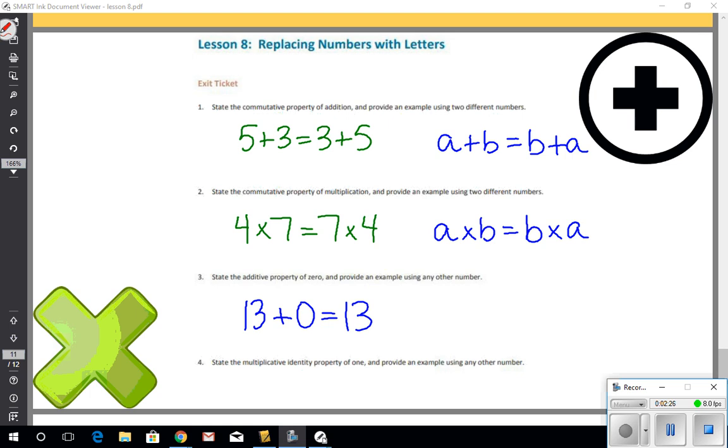So I can use any letter I want. So let's use the letter c. C+0 still gives me c. So any number plus zero, anything that you can think of to insert for the variable c, you will always get that number that you started with. So any number added to zero equals itself. That is the additive property of zero.